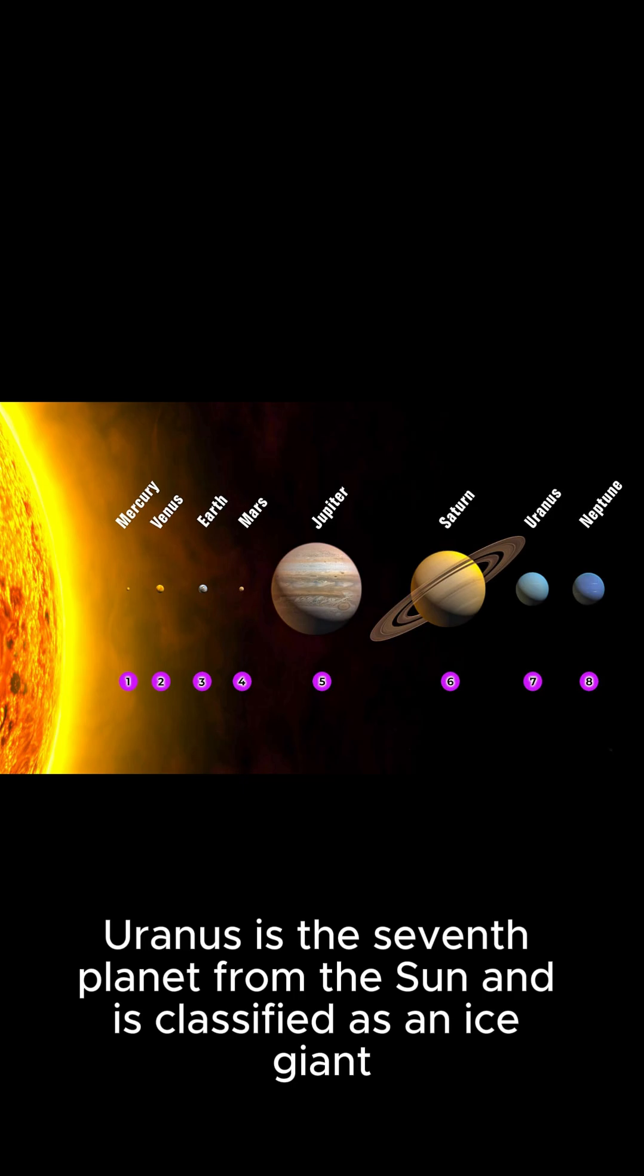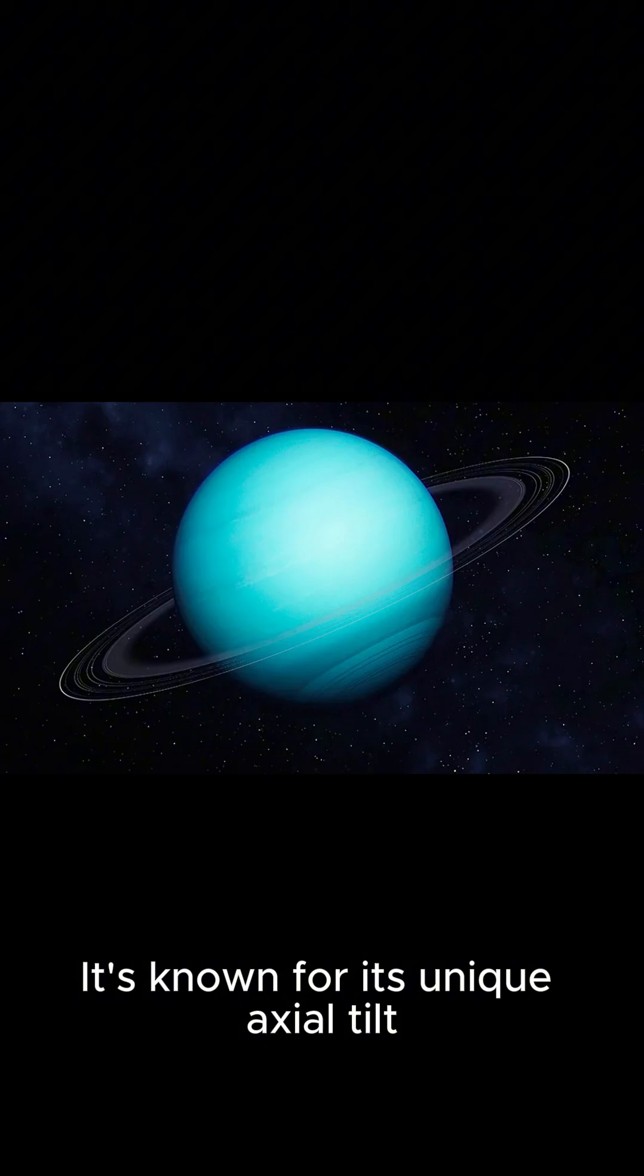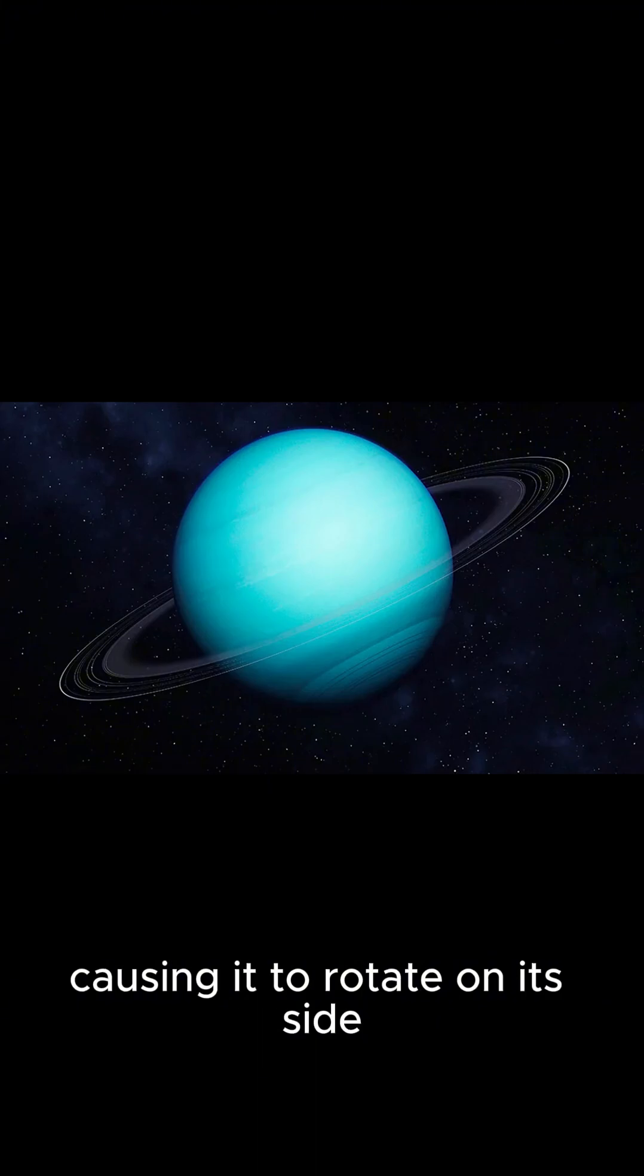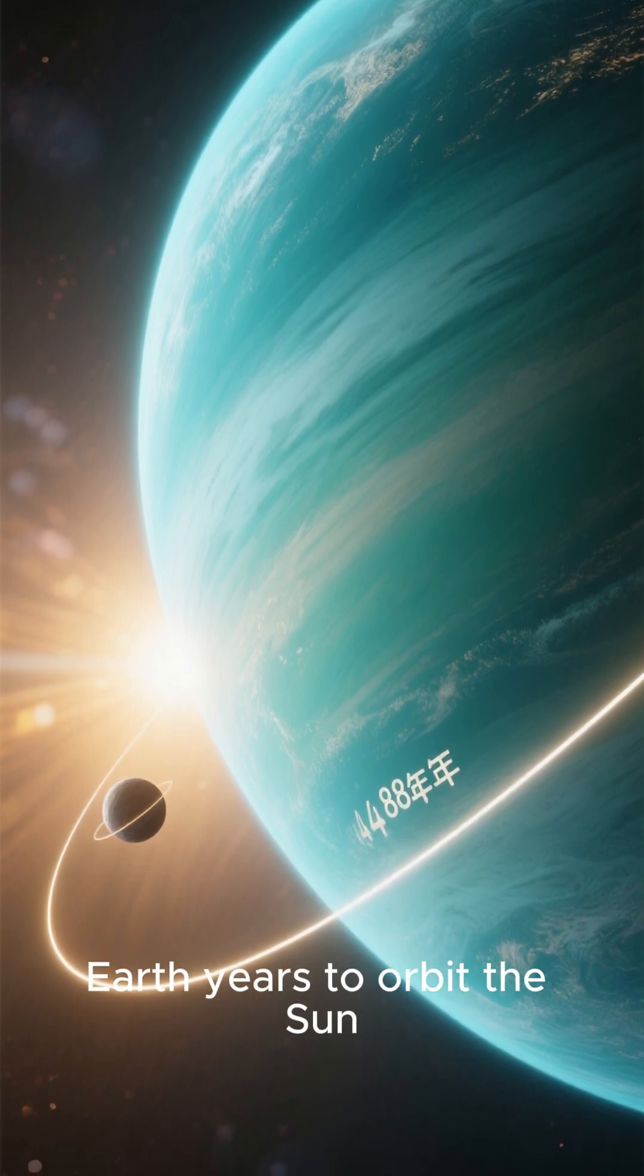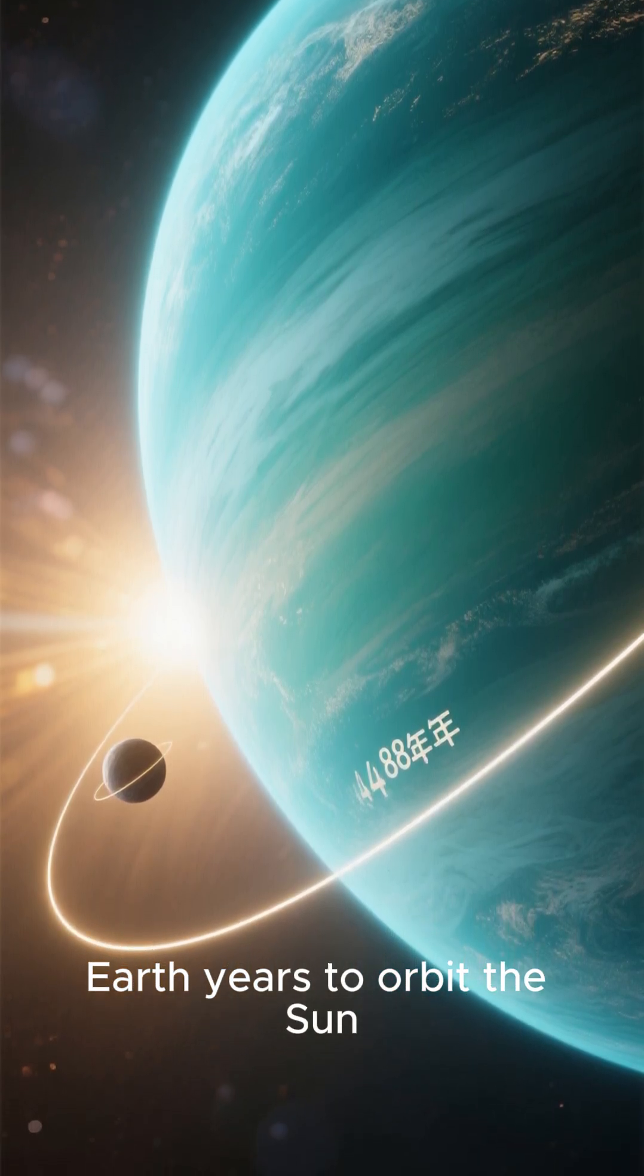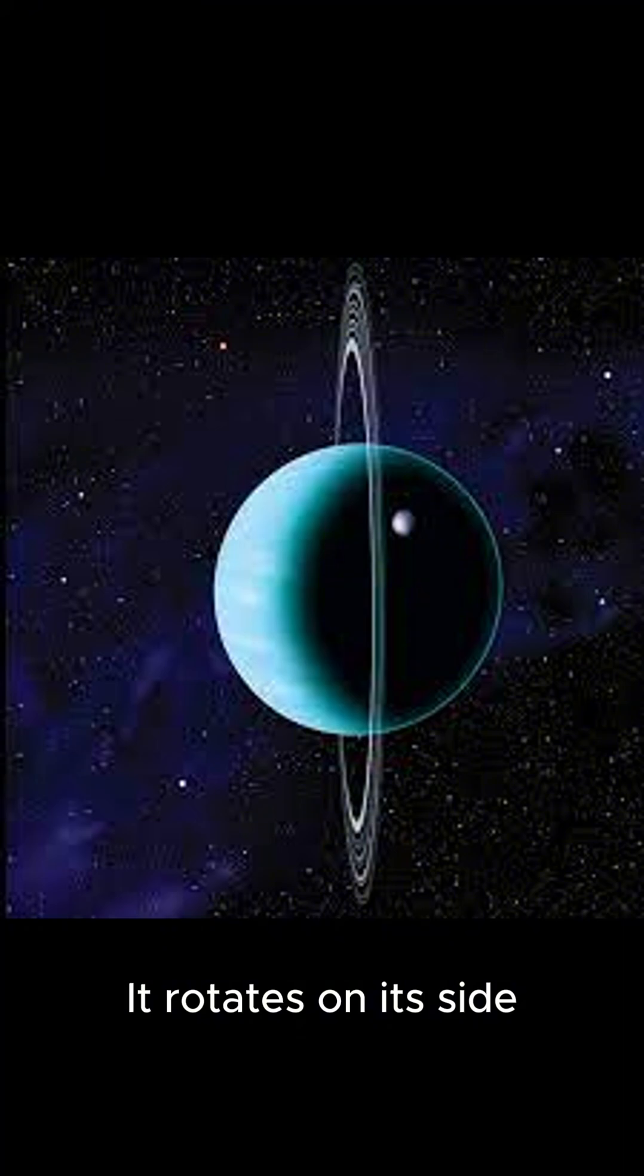It's known for its unique axial tilt, causing it to rotate on its side. Uranus takes about 84 Earth years to orbit the sun. It rotates on its side with its axis tilted at an angle of 97.77 degrees.